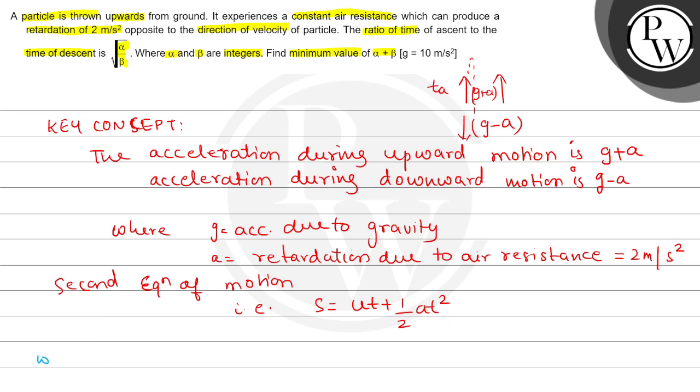Now, case 1 when particle is ascending upwards. In this case, let the distance is h. Height h equals 1 by 2, initial velocity u is 0, so it will be 1 by 2 and acceleration is g plus a because upward motion, and time of ascent that is Ta square. So this is equation 1.